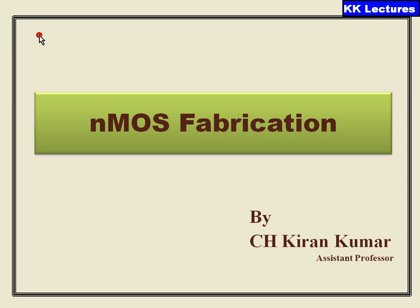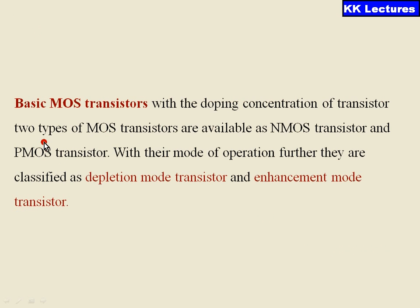Hi everyone, this is Kiran Kumar. Today we will discuss about NMOS fabrication. Basic MOS transistors, based on doping concentration, are mainly of two types: the NMOS transistor and the PMOS transistor. With their mode of operation, they are further classified into depletion mode and enhancement mode transistors. Before going into that classification, let us discuss what exactly a MOS transistor is.